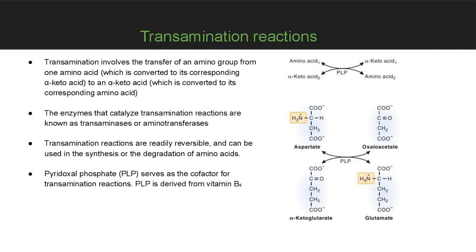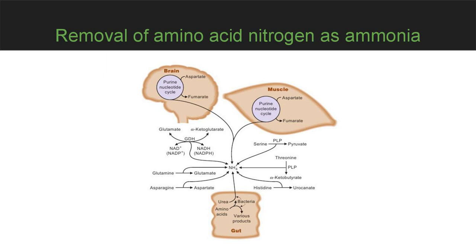In the process, the amino group is transferred to alpha-ketoglutarate, which is converted to its corresponding amino acid glutamate. All amino acids except lysine and threonine can undergo transamination reactions. The enzymes that catalyze these reactions are known as transaminases or aminotransferases. For most reactions, alpha-ketoglutarate and glutamate serve as one of the alpha-keto acid/amino acid pairs. Pyridoxal phosphate, derived from vitamin B6 (pyridoxine), is the required cofactor.